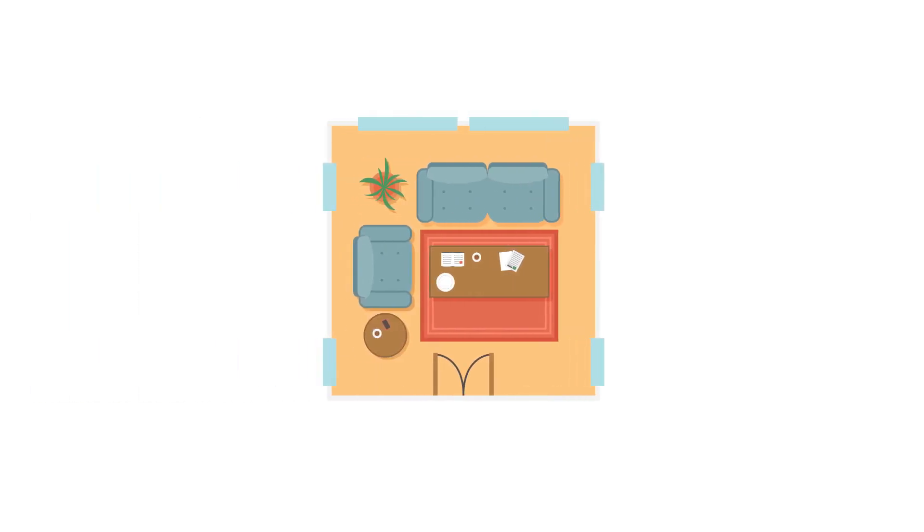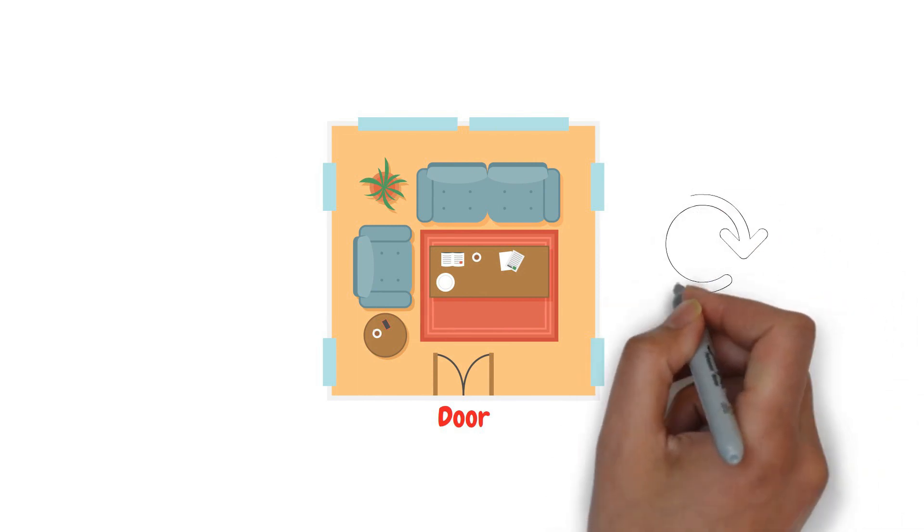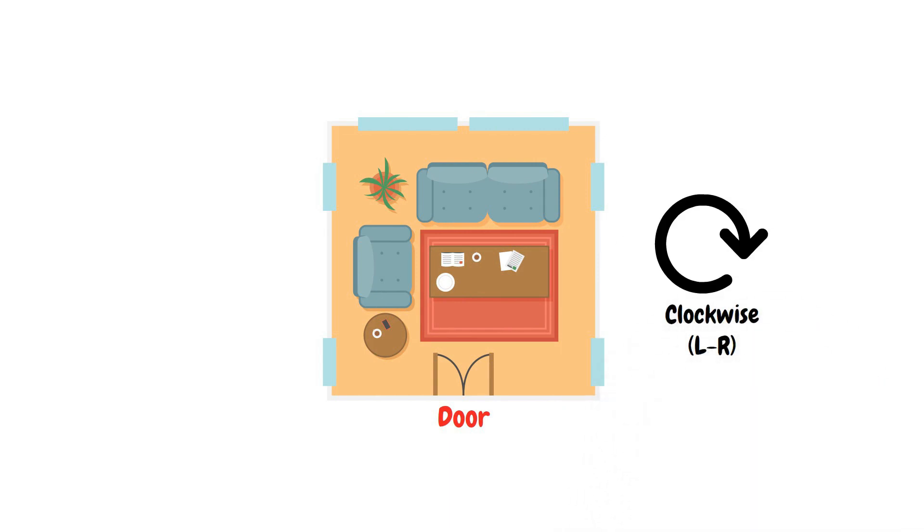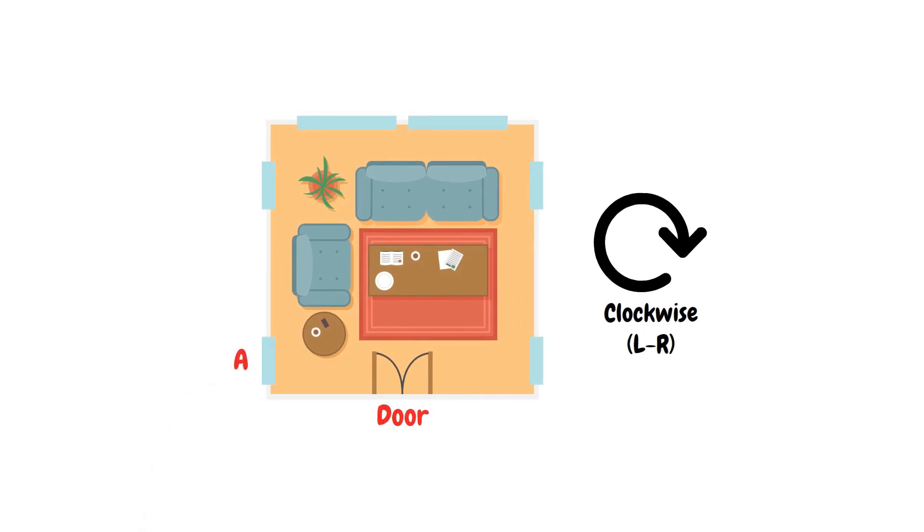In our first example, we will review a standard living room. There is only one door coming into the room and we have windows on every other wall. The first rule of thumb to learn is that we always go clockwise or left to right. So when you enter the room, we are going to start naming windows left to right. This would be A, B, C, D, E, and F.